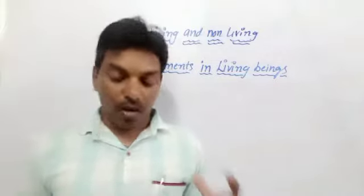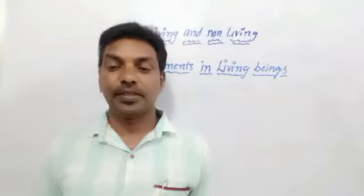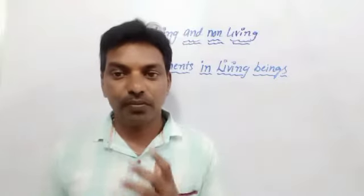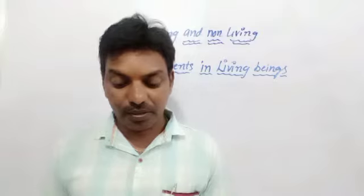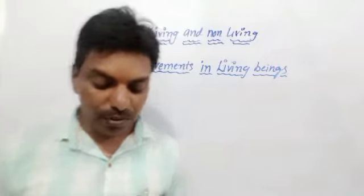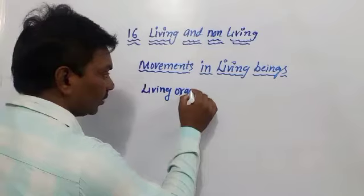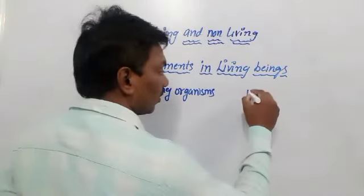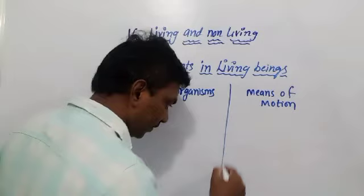How do the following living beings go from one place to another place? There is a table given in our textbook. Some organism names are given in it. We want to fill that table and write their movements. Observe the following table, discuss in groups, and write the way the organisms move. The two columns are: living organisms and means of motion — how do they move.